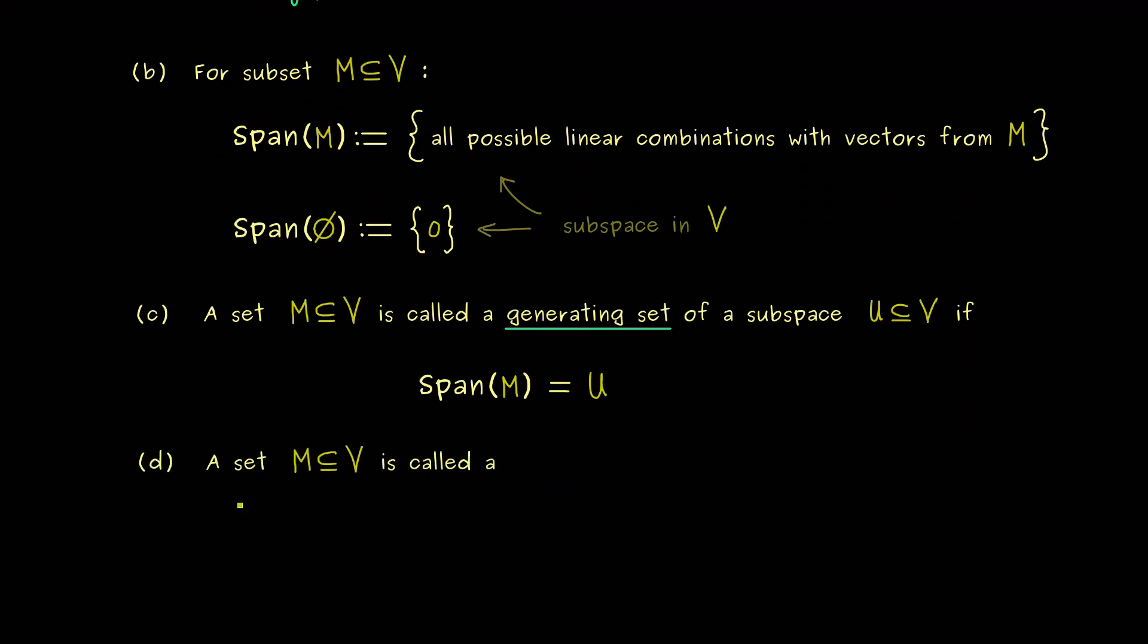And exactly this thinking leads us to the concept of linear independence. Hence a set M is called linearly independent if each vector we can reach with a linear combination only has one linear combination. In other words what we want here is a uniqueness in the coefficients alpha. So for example if we want to span the zero vector with such a linear combination here, then there should be only one possibility for the coefficients alpha_j.